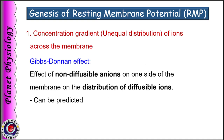Why does concentration gradient exist across the membrane, or why are ions distributed unequally? This is due to the Gibbs-Donnan effect. In simple words, it is the effect of non-diffusible anions on one side of the membrane on the distribution of diffusible ions.